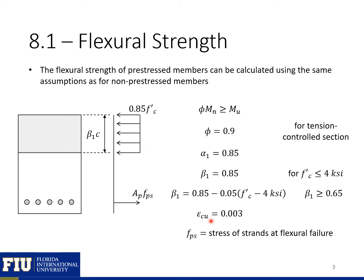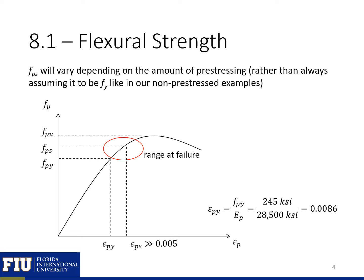Other ACI assumptions include that the strain at the ultimate compression fiber is equal to 0.003 at failure. One difference between pre-stressed and non-pre-stressed members when looking at flexural strength is the stress in the reinforcement at the time of failure. With non-pre-stressed members, we'll assume that we have the yield strength at failure — so we assume an elastic-plastic material.